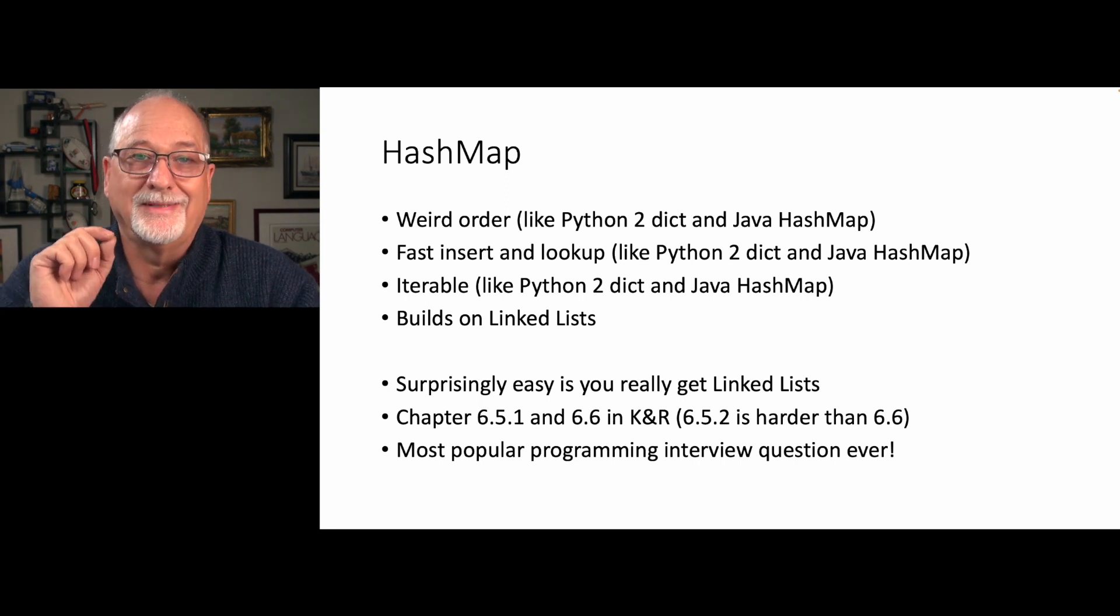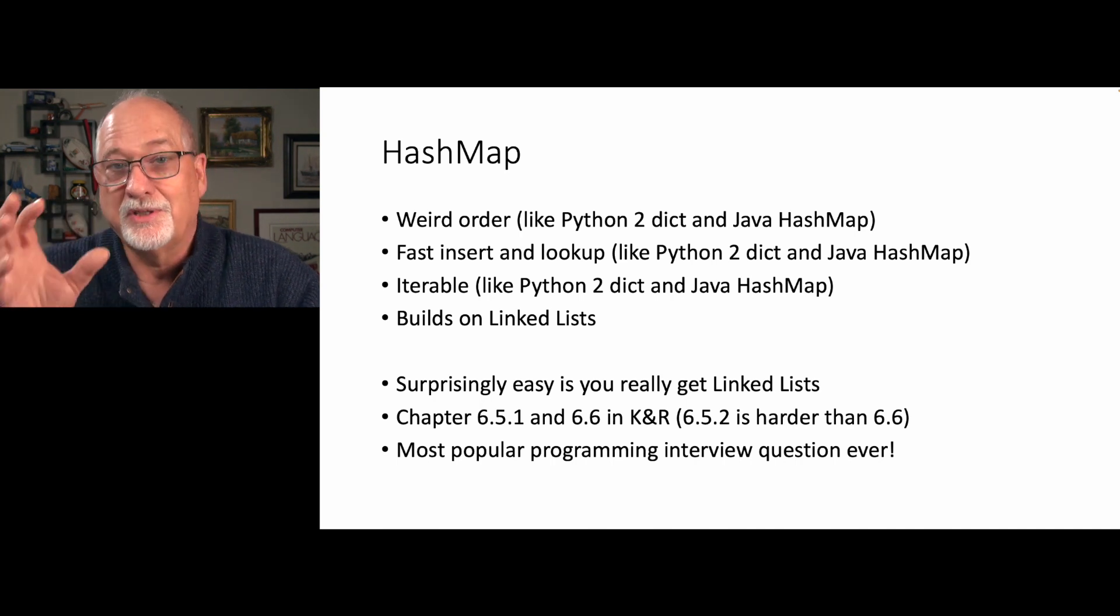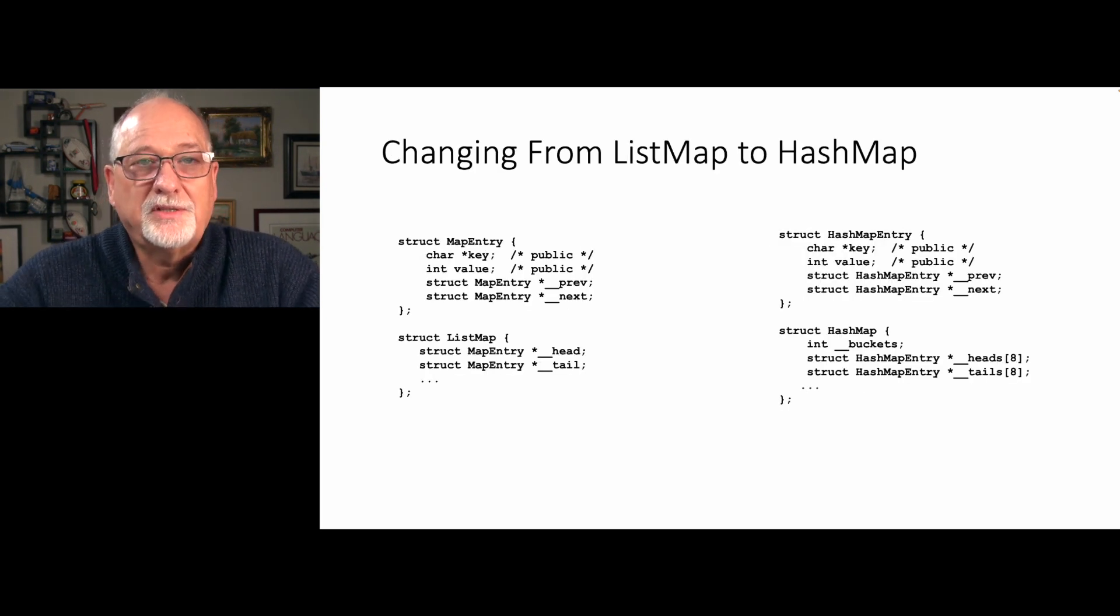6.5.2 is literally the hardest part of the book, and that's why we kind of start with 6.6 and then kind of go back to 6.5. Okay, so let's take a look at our data structures and how we're going to go from the list map to the hash map.